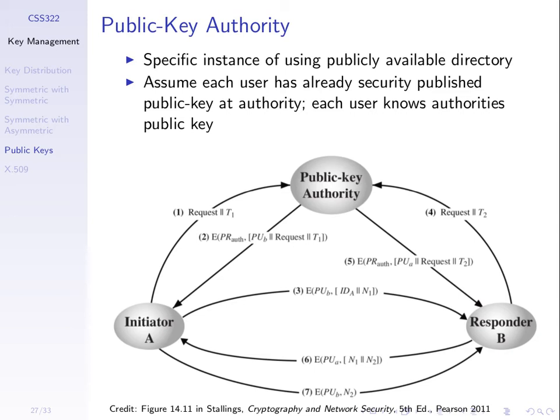The idea is: if I have Steve's public key and give it to you, you want to be sure it's mine. The way to do that is to get some other person that you trust to sign my public key. If you trust some third party and they sign my public key saying 'this is Steve's public key', then you can verify and trust it. That third party is called a public key authority.